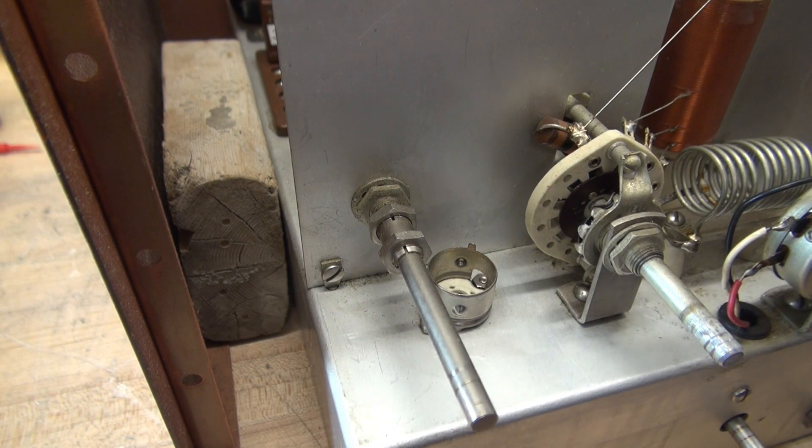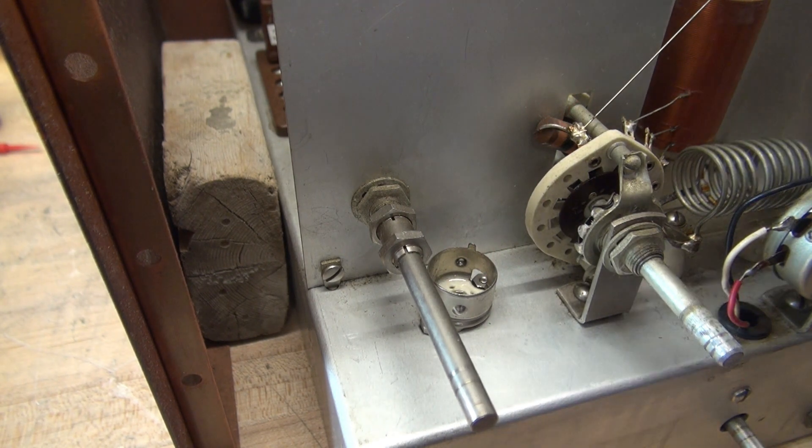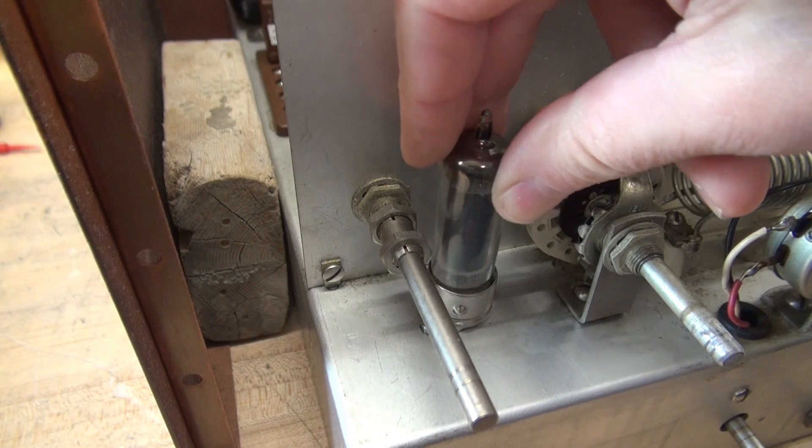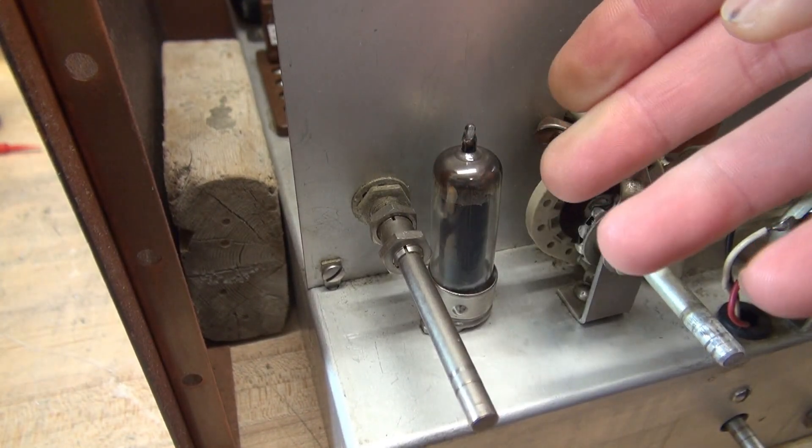To clean the sockets, take a little bit of D5, spray it right in where the pins are at, and take a tube, insert, and retract a couple times to remove oxidation.